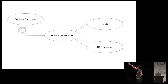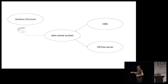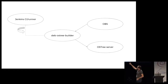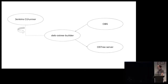The Jenkins CI runner calls this dev-ostree-builder, invokes it on a timer — for instance, every night if you want to build a snapshot of your distribution every night. It pulls the packages from OBS, builds it, commits it to the OSTree server. This can be run manually, on a timer, however you want it.